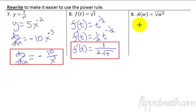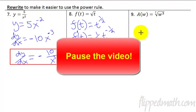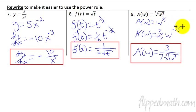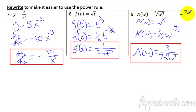Number nine — pause and try this on your own. The key was recognizing the exponent as three-sevenths. The three-sevenths comes down, and then you subtract one, which is seven-sevenths. Three-sevenths minus seven-sevenths gives negative four-sevenths. So the answer is three over seven times the seventh root of w to the fourth.